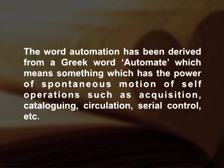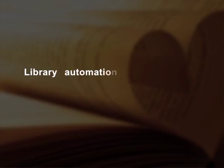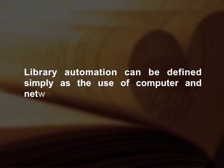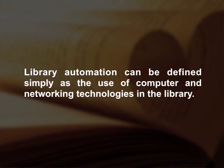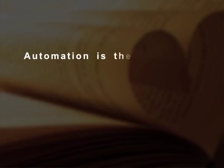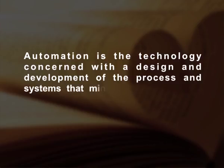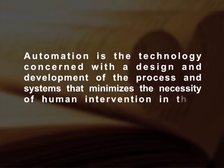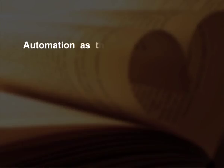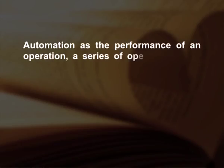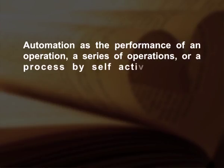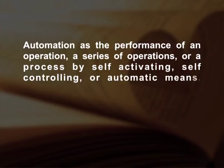Library Automation can be defined simply as the use of computers and networking technologies in the library. According to the Encyclopedia of Information and Library Science, automation is the technology concerned with the design and development of processes and systems that minimizes the necessity of human intervention in their operations. The ALA Glossary of Library and Information Science defines automation as the performance of an operation, a series of operations or a process by self-activating, self-controlling or automatic means.